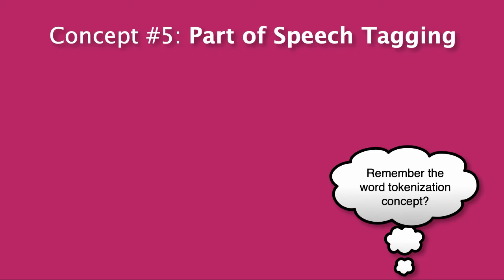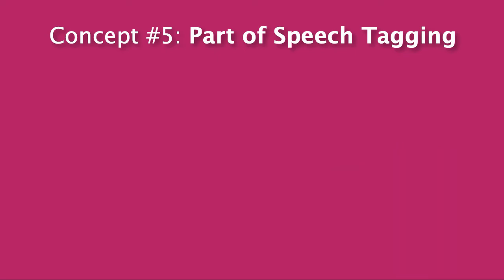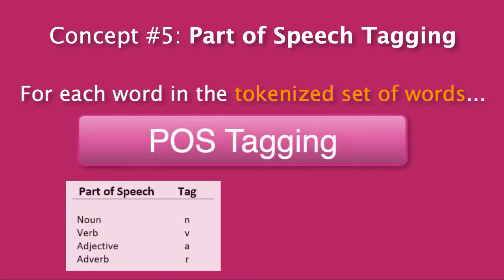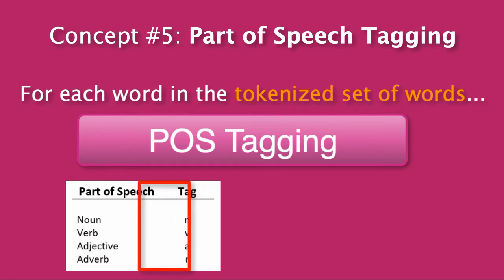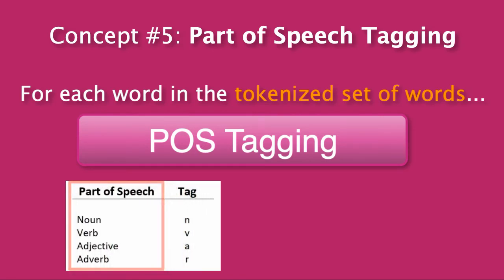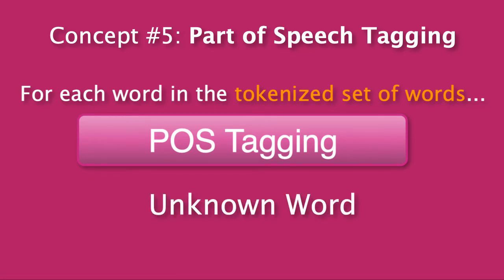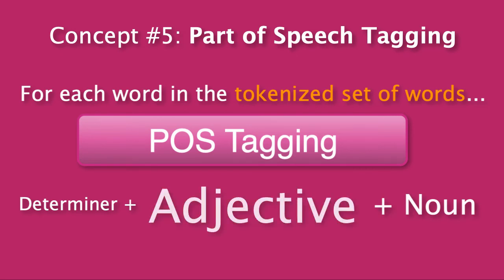Finally, let's move on to our last concept of the day: POS tagging, also known as part of speech tagging. Remember the word tokenization concept? For each word in the tokenized group of words, POS tagging can be performed, which assigns a particular label to each token or word to indicate its part of speech. Tagging is often utilized for pattern detection and text analysis. For instance, if an unknown word is preceded by a determiner — a word placed in front of a noun to specify quantity — and followed by a noun, the word can be tagged as an adjective.